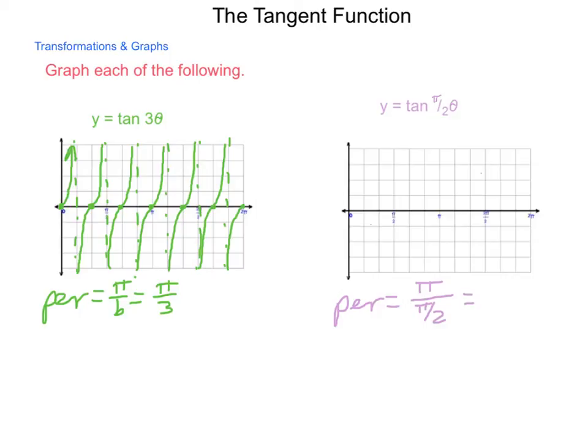Dividing by a fraction gives us pi over 1 times 2 over pi. Our pi is simplified to 1. Our period is 2 in this case.